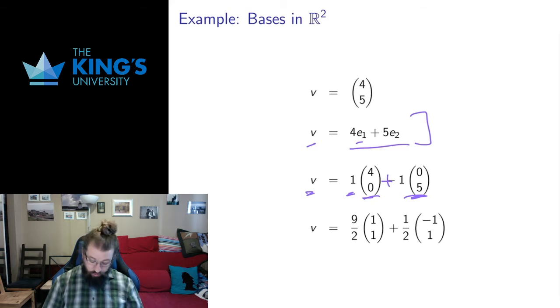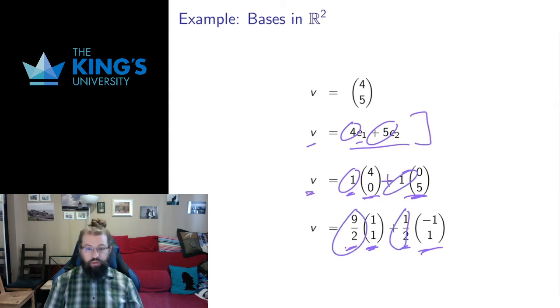And I can do this for any basis that I want. (1, 1) and (-1, 1) are also a basis for R². These are a couple of diagonal vectors and it turns out that (4, 5) is 9 halves times this—feel free to check the arithmetic if you want. So we have a thing here where we're taking a vector and expressing it in terms of different bases. (4, 5) in this basis, (1, 1) in this basis, (9/2, 1/2) in this basis.